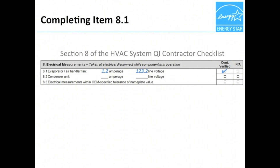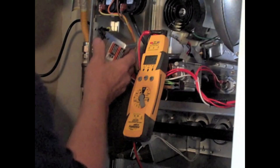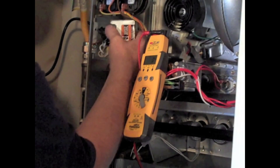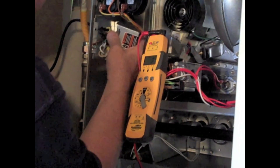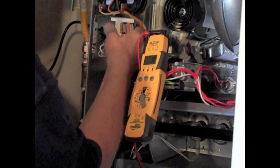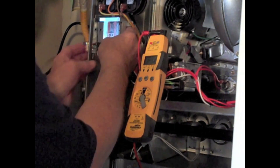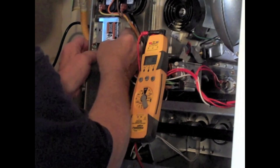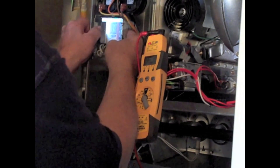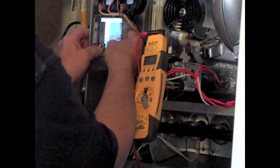Now Rob can complete item 8.1 of the checklist. He records the current and voltage values that were measured at the evaporator air handler fan. Since we are already inside the air handler, we could do a quick check for one of the values needed for Section 6, refrigerant tests — that is the return air wet bulb temperature for item 6.2.